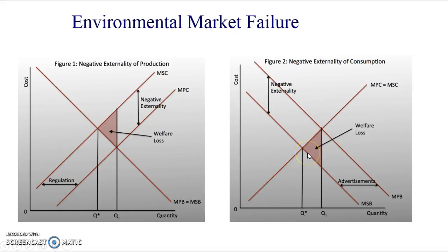For a negative externality in consumption, consumers purchasing and consuming a good aren't taking into account the full cost of their activities. We get over-consumption: they're consuming at Q1 when they should be at Q*, giving us a welfare loss triangle showing the external cost as the vertical distance. Perhaps advertising could make people aware that their consumption is harming others — thinking of alcohol consumption causing damage and costs for policing and hospital beds. But whether people would change their behaviour depends on how much they consider external costs of their actions.